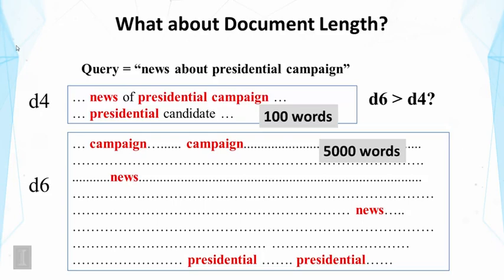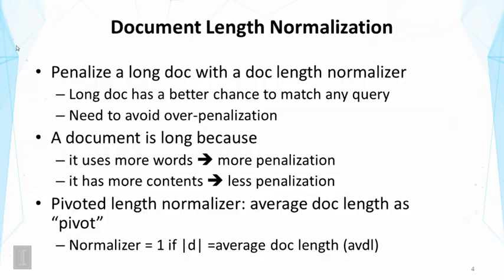In general, if you think about long documents, they would have a higher chance to match any query. In fact, if you generate a long document randomly by simply sampling words from a distribution of words, then eventually you probably will match any query. So in this sense, we should penalize long documents because they just naturally have better chances to match any query. This is the idea of document length normalization.